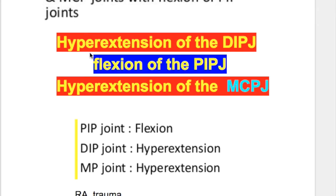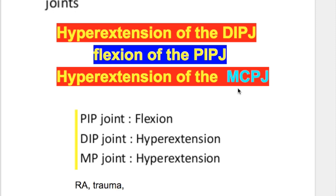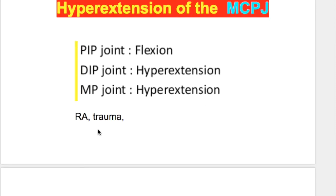In boutonniere deformity, there is hyperextension of the distal interphalangeal joint and flexion of the proximal interphalangeal joint. The joint distal to the proximal interphalangeal joint is hyperextended, and the metacarpophalangeal joint, which is proximal to the PIP joint, is also hyperextended. This condition occurs in rheumatoid arthritis and also after trauma.